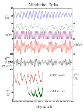Perihelion presently occurs around January 3, while aphelion is around July 4. When the orbit is at its most eccentric, the amount of solar radiation at perihelion will be about 23% more than at aphelion.